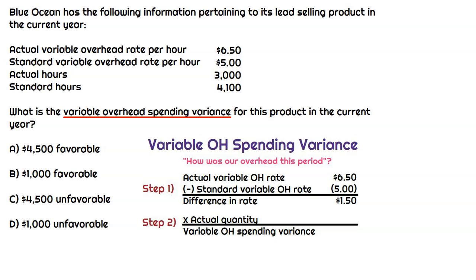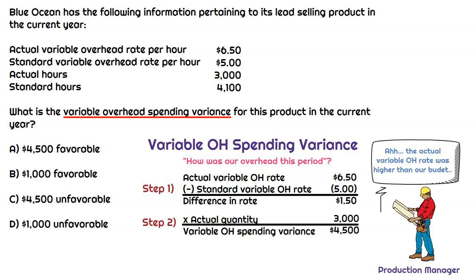Now we need to figure out by how much. We take that difference of $1.50 and we multiply by actual hours — not the standard hours. We multiply by 3,000 actual hours, and that means we have a $4,500 variance. Because the actual rate was higher than the standard or budgeted rate, that is going to be a $4,500 unfavorable variance. So that's the correct answer.